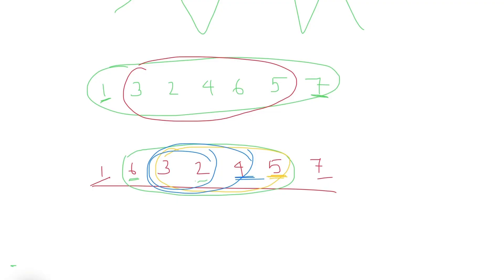The algorithm is: check whether the smallest or largest number is lying at either boundary. If so, remove that element and try the inner sub-array, continuing until we find a valid one or the sub-array becomes too small. In the first example, after removing 7 and 1, we found a valid one. In the second, we kept removing but never found a valid sub-array, so we output -1.